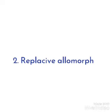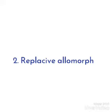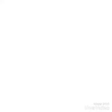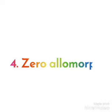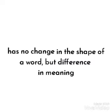Another type is Replacive Allomorph. Just like the name, it replaces letters within the word to create irregular past tense forms or irregular plural forms. Another type is Suppletive Allomorph, which has a complete change in the shape of a word. And the last is Zero Allomorph — it is an Allomorph that has no change in the shape of a word, but a difference in meaning.